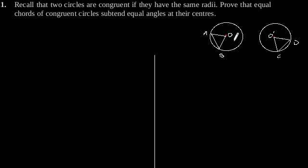If we superimpose two circles of equal radius, both circles will cover each other. Therefore, two circles are congruent if they have equal radii.